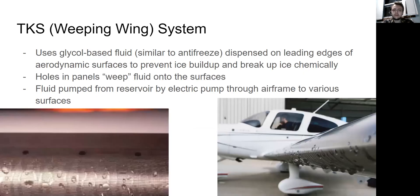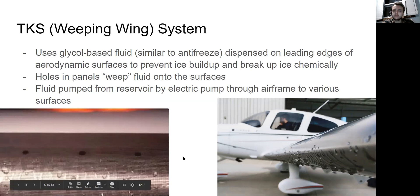A TKS, or weeping wing system, is a system that uses glycol-based fluid, which is similar to what you find in antifreeze fluids, that gets dispensed on the leading edges of aerodynamic surfaces to prevent ice buildup and break up ice through its chemical properties. Holes in the panels along, as you can see here, along the leading edge of the wing, they're very, very, very fine, small holes. They weep fluid onto the surface, which coats the surface in this glycol-based fluid. This fluid is pumped from a reservoir in the aircraft by an electric pump through the airframe to the various surfaces that have the weep holes on it.